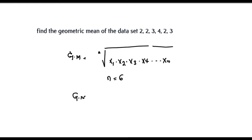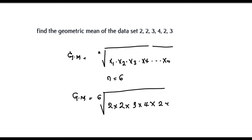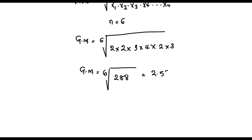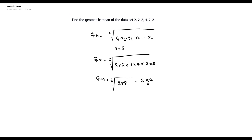So the geometric mean equals the 6th root of 2 × 2 × 3 × 4 × 2 × 3. Using our calculator, 2 × 2 × 3 × 4 × 2 × 3 gives us 288. Then we take the 6th root of 288, which gives us 2.57. So the geometric mean of this dataset, to two decimal places, is 2.57.